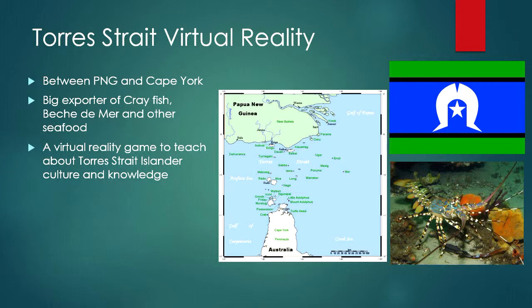It's about the culture and the knowledge in the Torres Strait Islands. Where are the Torres Strait Islands? They're located between Cape York in far north Queensland and Papua New Guinea — there's a whole collection of islands in between there. The islands are a big exporter of things like crayfish, bêche-de-mer, which is sea cucumber, and some other seafood.